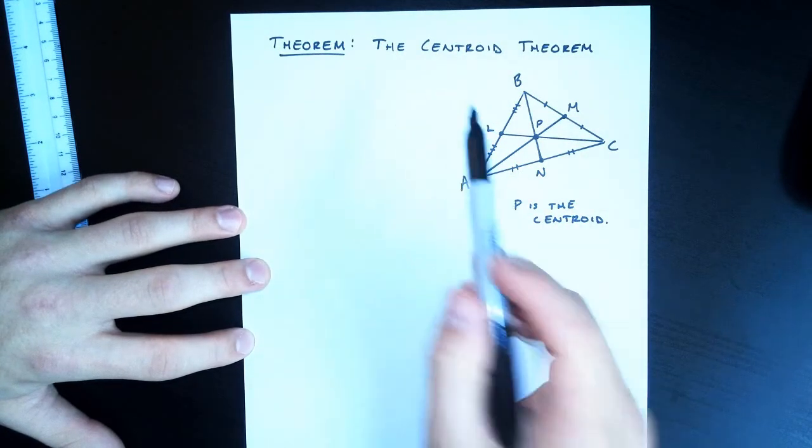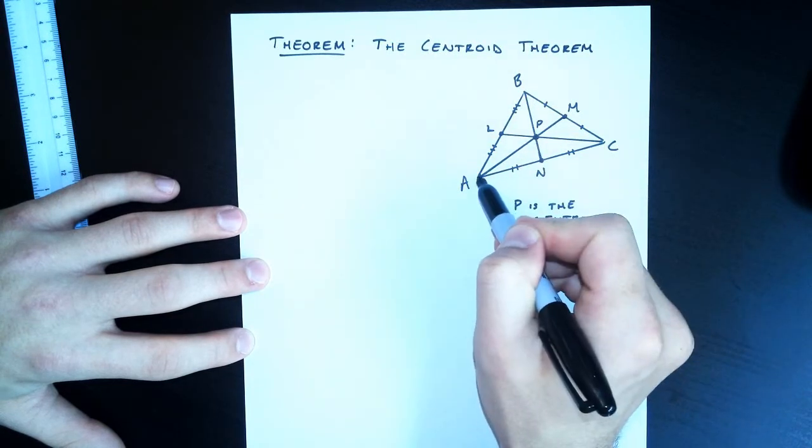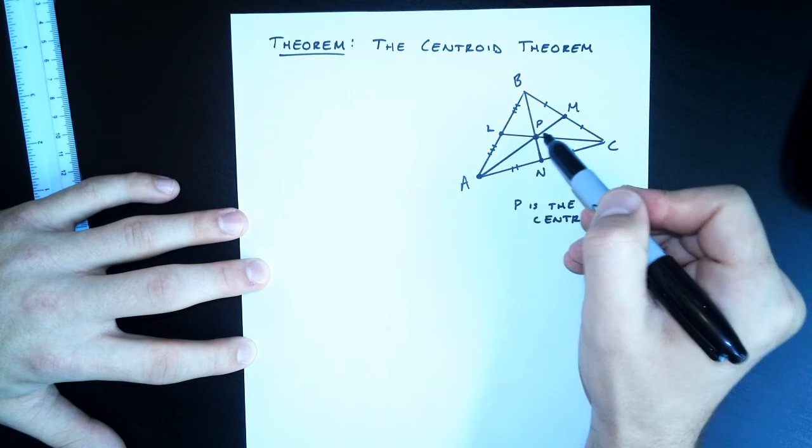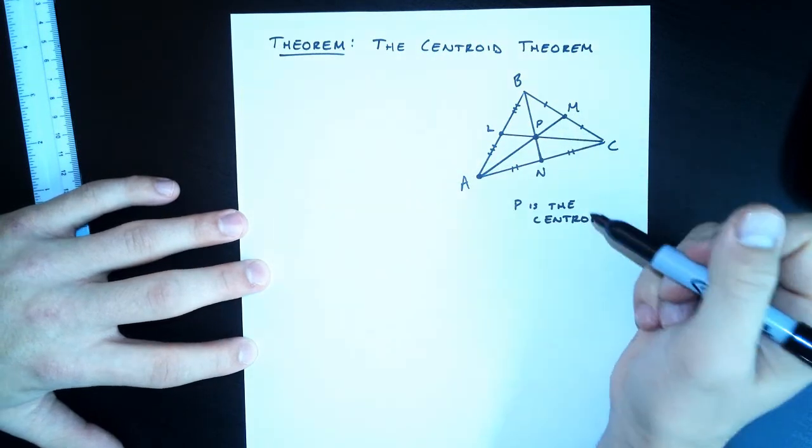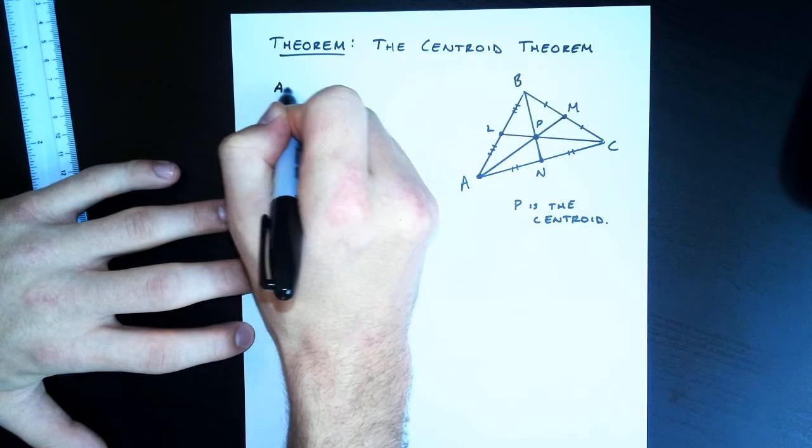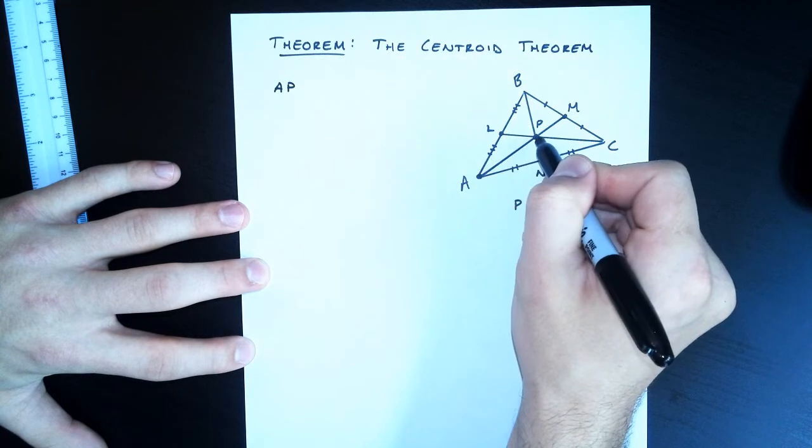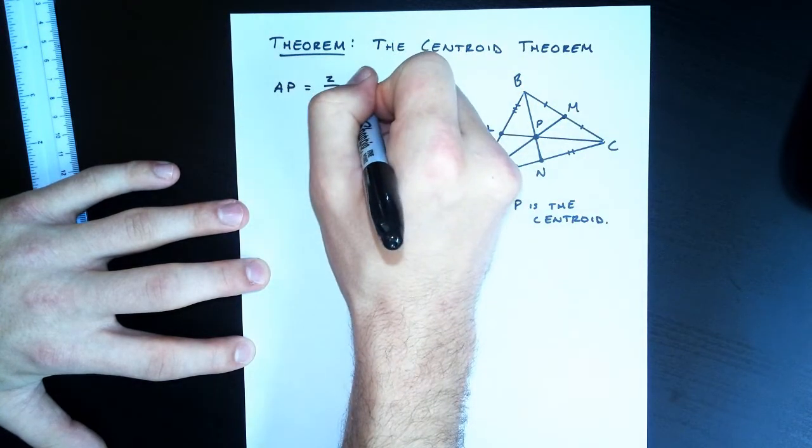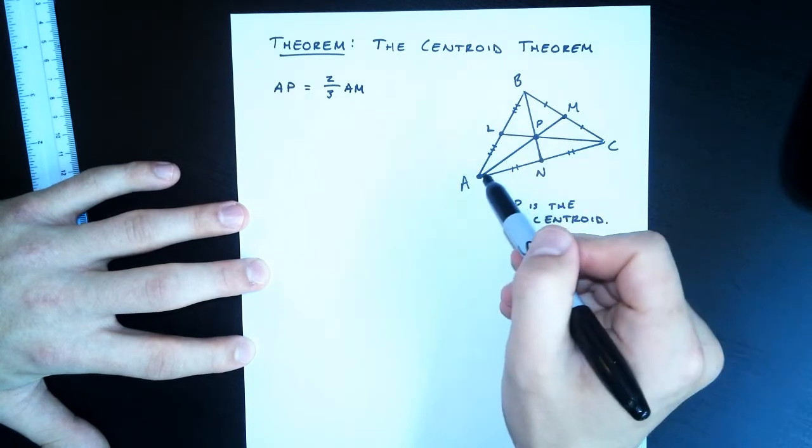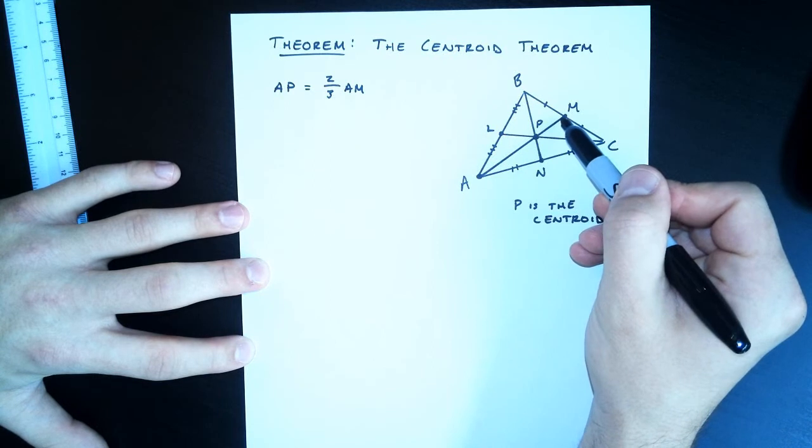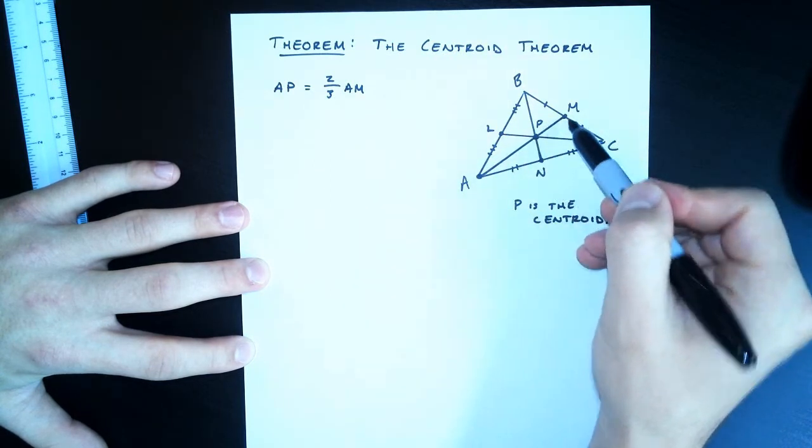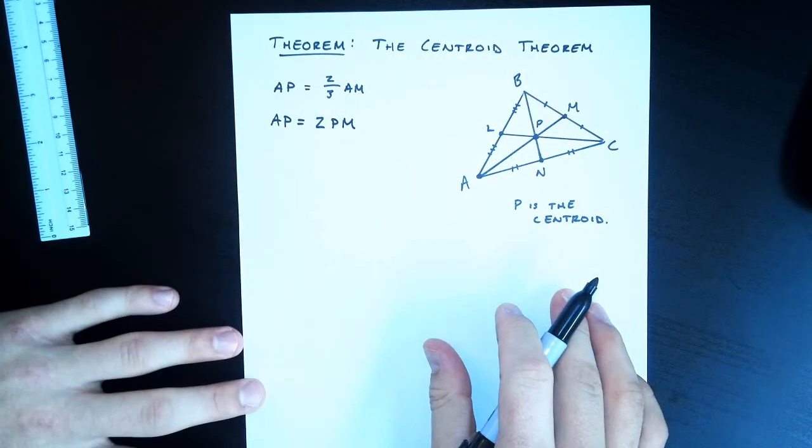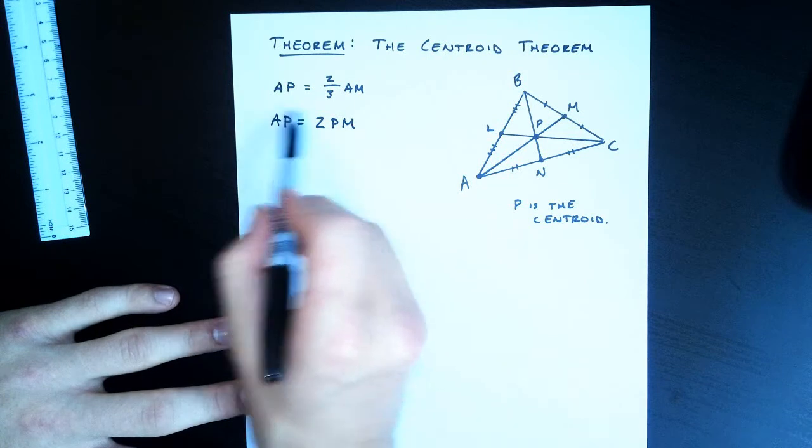So, the centroid theorem says that the centroid is two-thirds the distance from the vertex to the opposite side. This is two-thirds of the way, and then this segment here is the last one-third. One way we could think about that is I could say that AP, the length from A to the centroid, is two-thirds of the entire median AM. Or, because this represents two-thirds of the distance and this represents one-third, I know that AP is twice as long as PM. So AP is two times the length of PM, and this is what we're going to show.